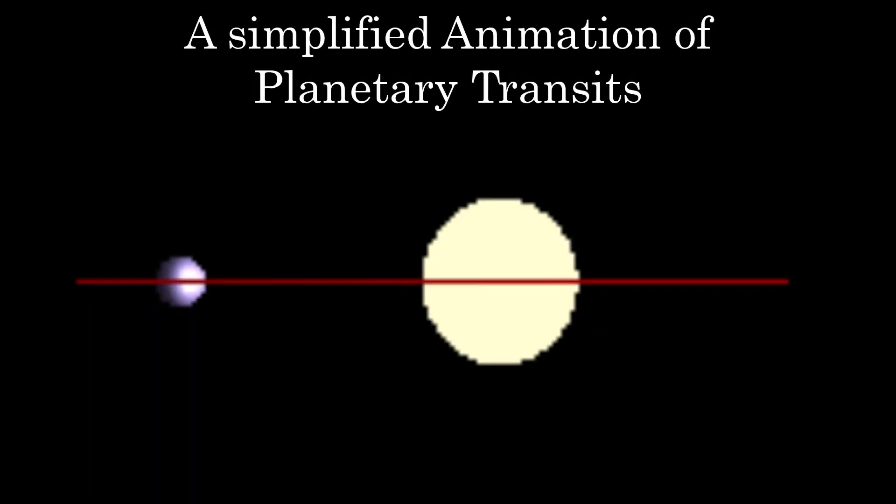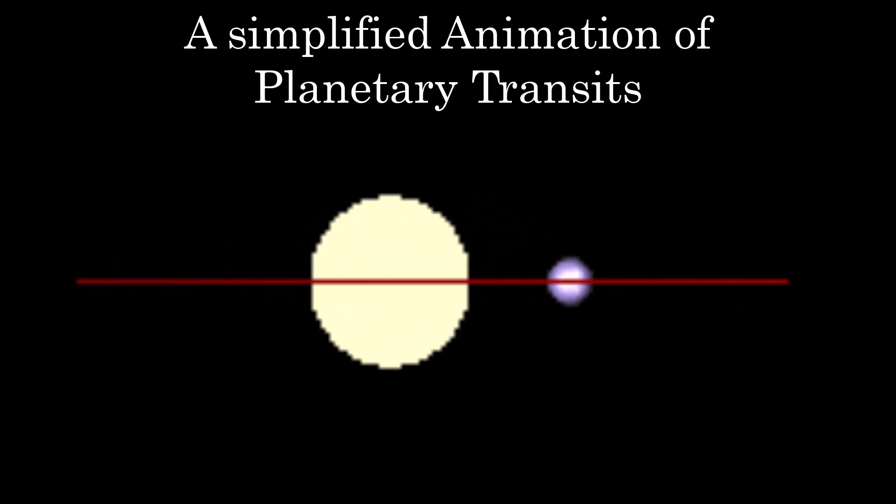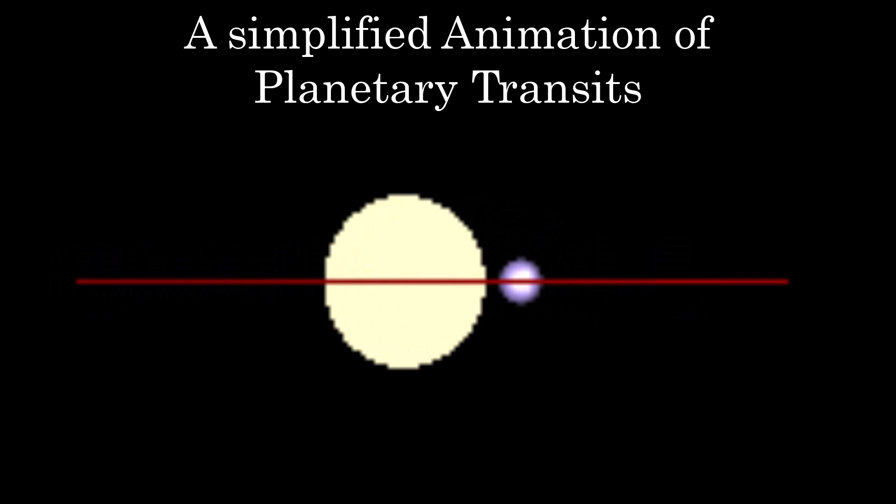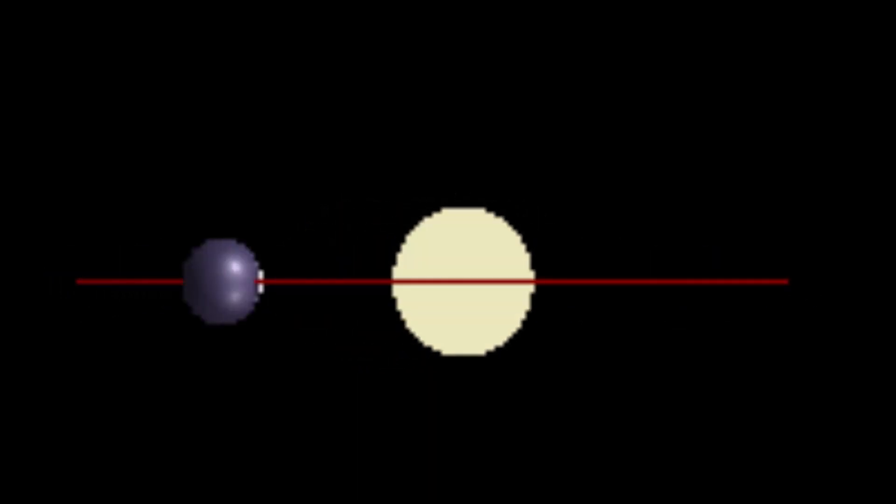I said earlier that seeing this was rare, and that's because the chance of having a planet orbiting in a way that intersects our line of sight to a star is tiny. Yet due to the sheer vastness of space and the number of stars there are, it's inevitable we'll see this effect, leading to thousands of confirmed exoplanets because of it.